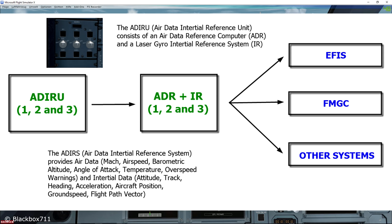The Air Data Reference Computer provides data like Mach, airspeed, barometric altitude, angle of attack, temperature and overspeed warnings. The Inertial Reference System provides important data like attitude, track, heading, acceleration, aircraft position, ground speed and flight path vector information.